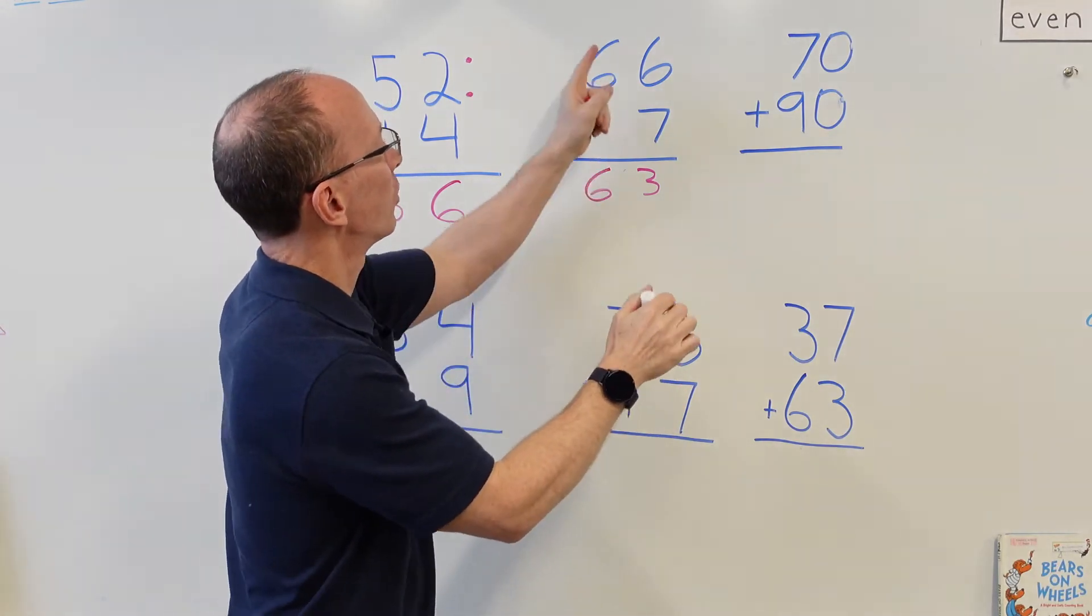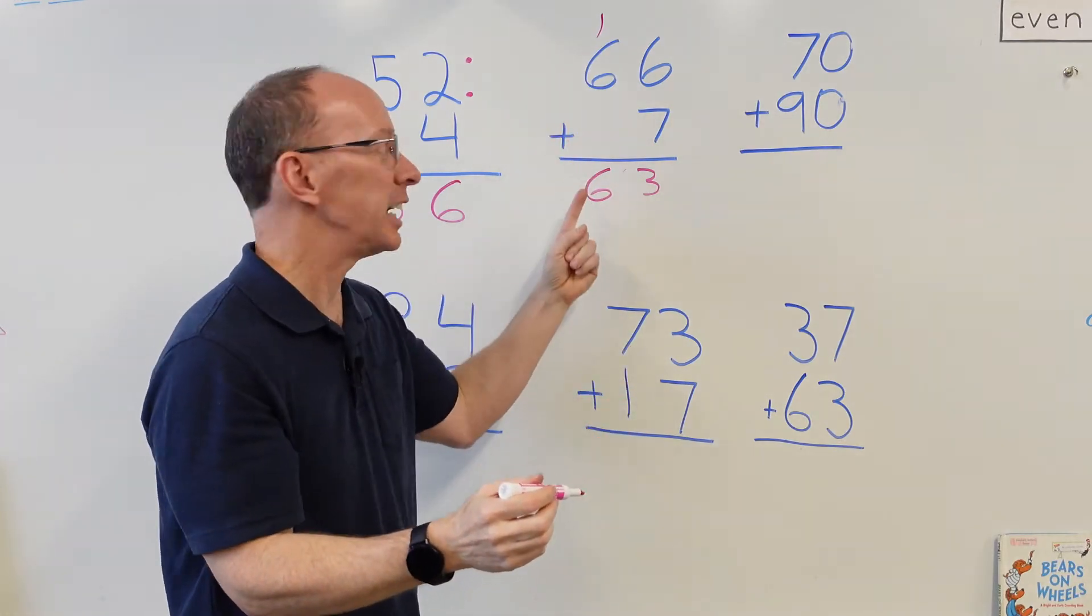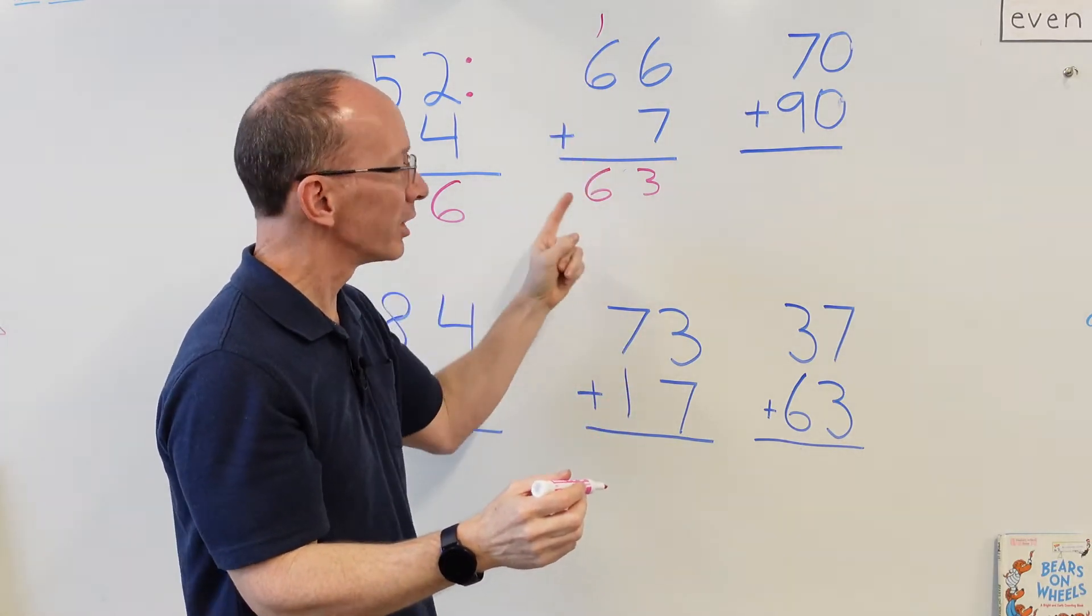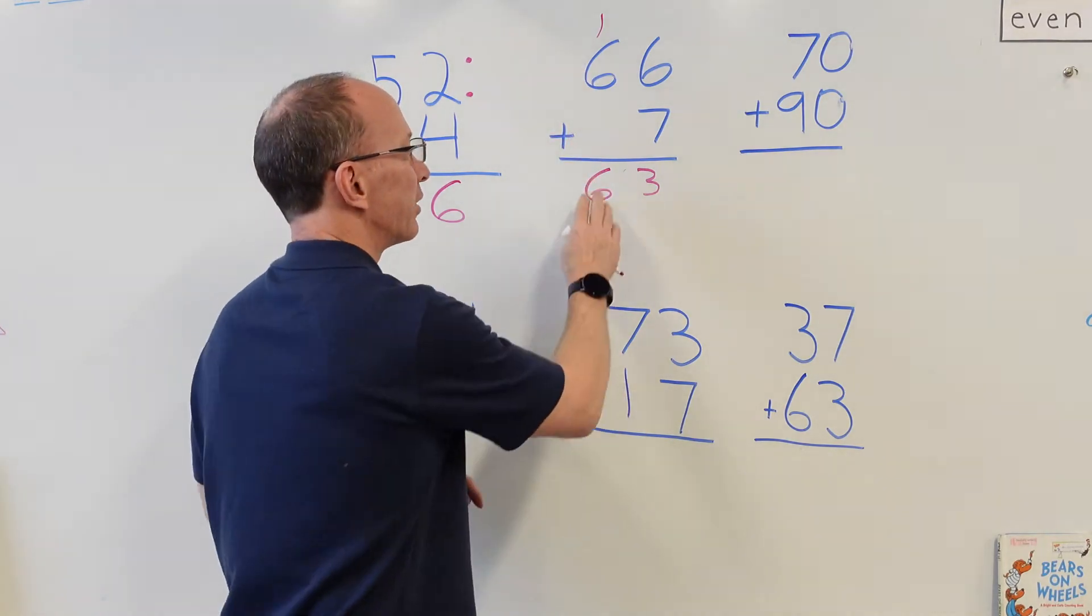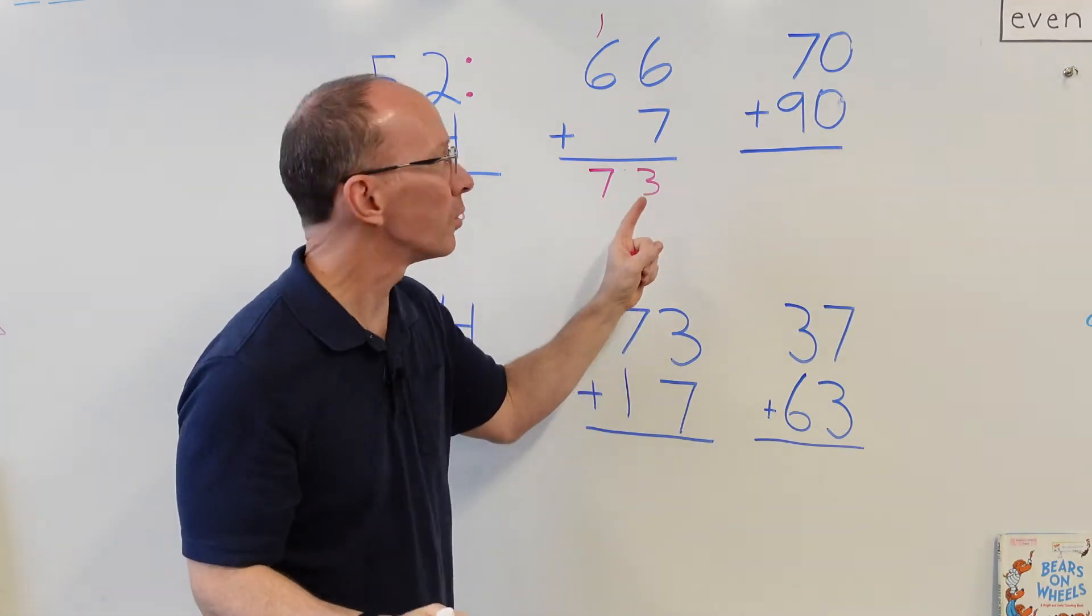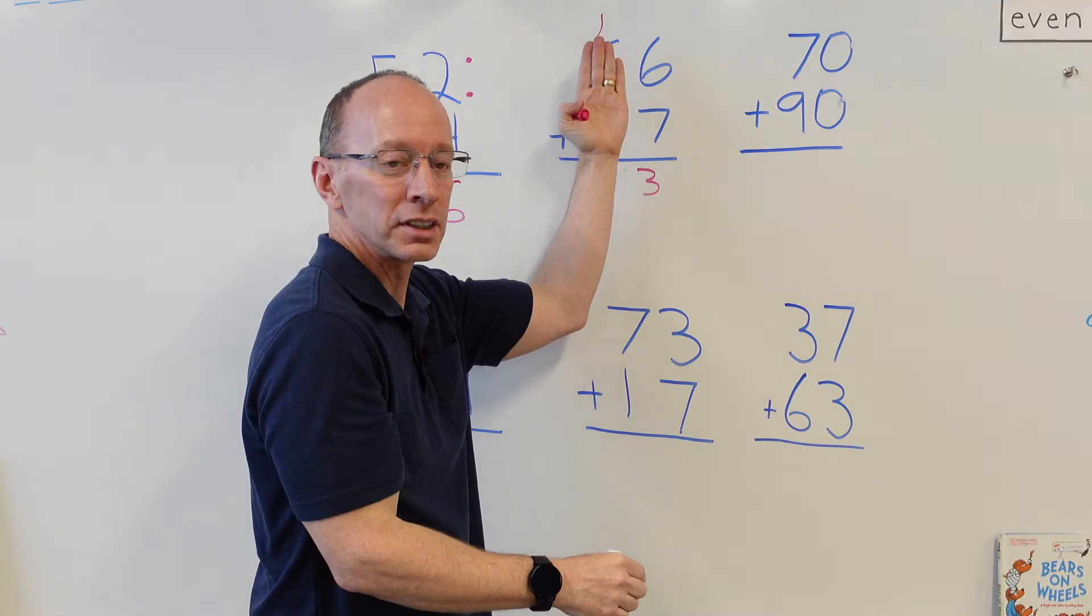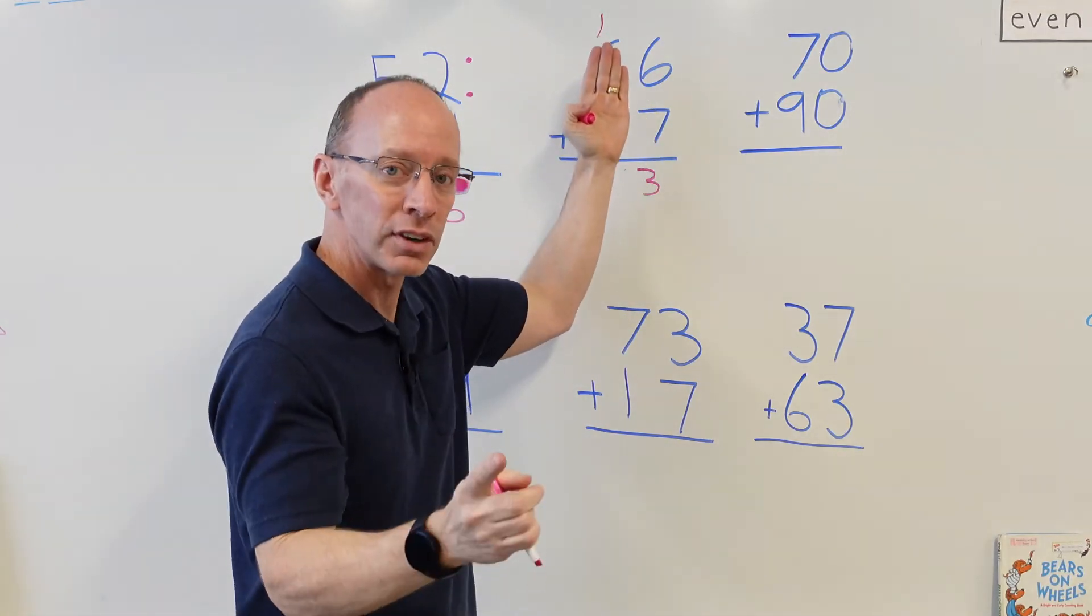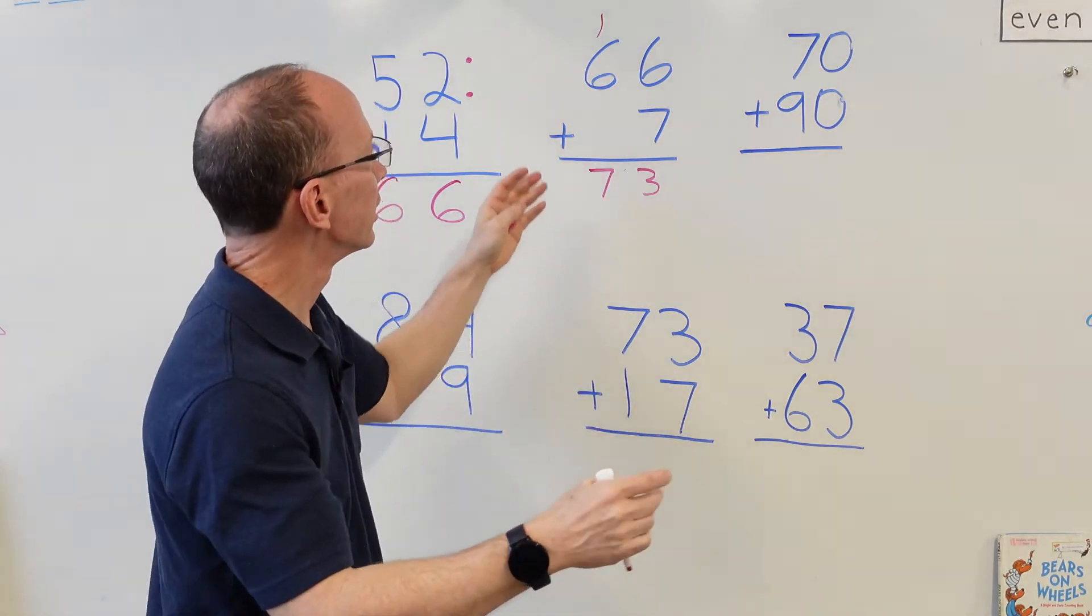Remember carrying that one. If I carry the one, I put it up here. And oh no, now this changes. It's not six, it's six plus one, and so that would be seven right here. This is why it's so important that we always need to add the ones first. We add the ones first, then we add the tens, and so on, the hundreds and so on. So 66+7 is 73.